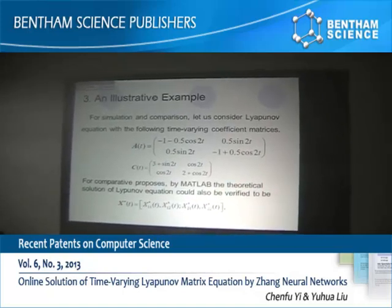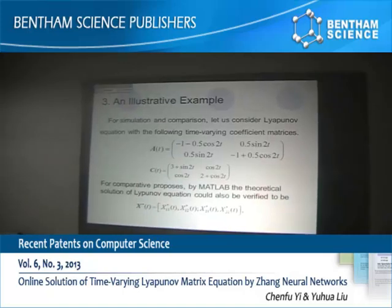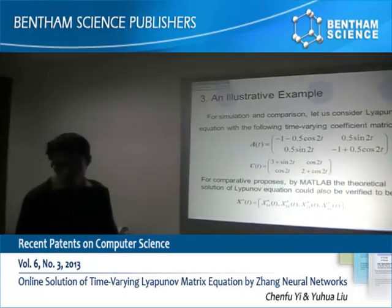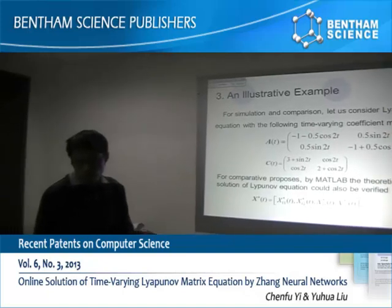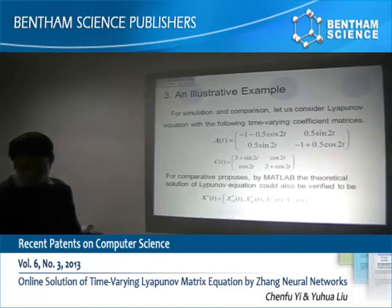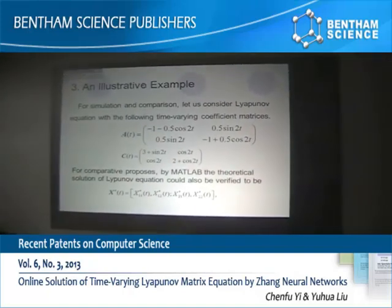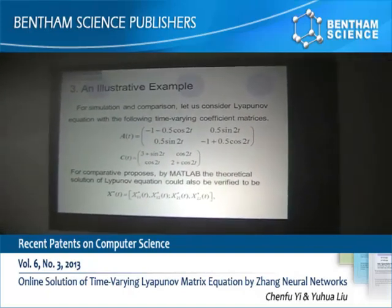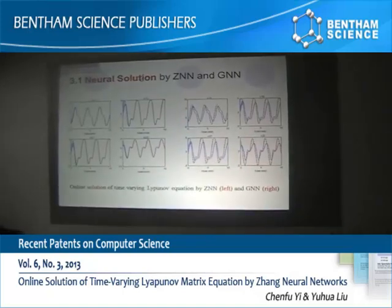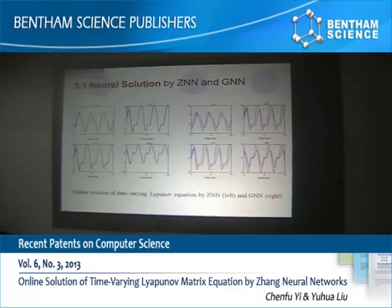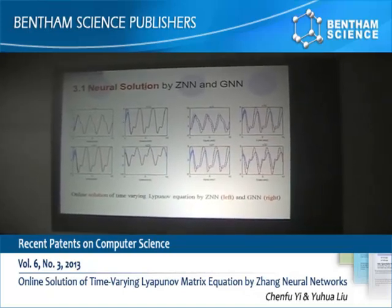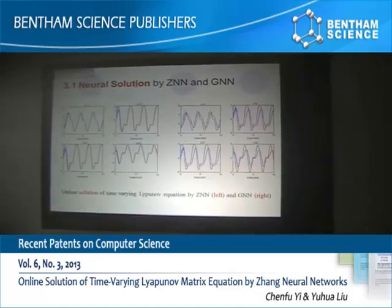For simulation and comparison, the above-mentioned ZNN and GNN models are applied to solve the Lyapunov equations with the following time-variant coefficient matrix. For comparative purposes, using MATLAB, we can obtain the theoretical solution X star. In this figure, the red line denotes the theoretical solution and the blue line denotes the neural network solution.